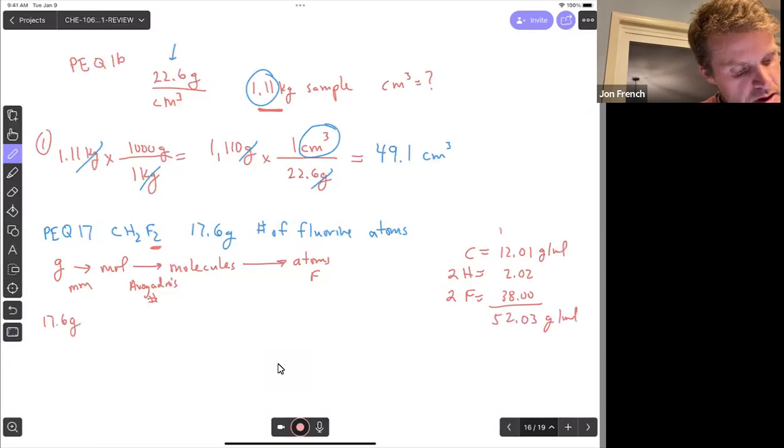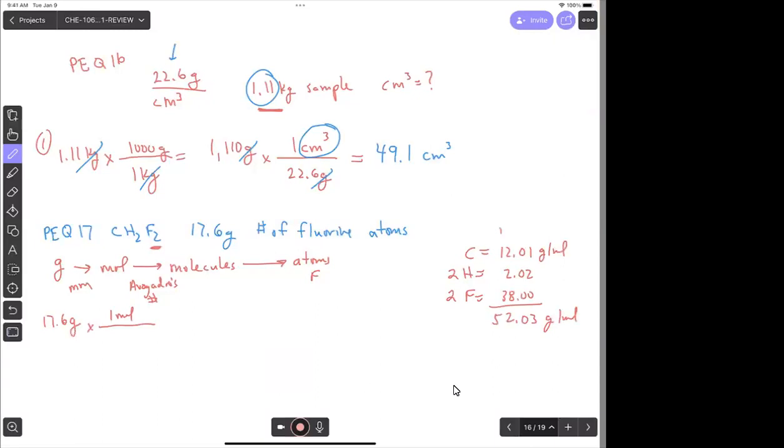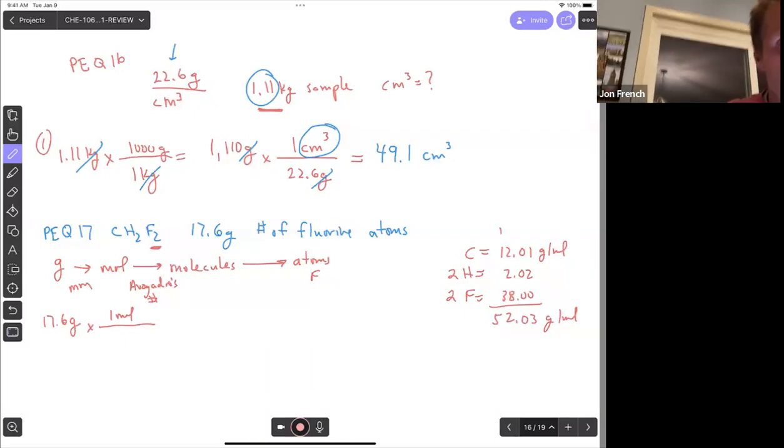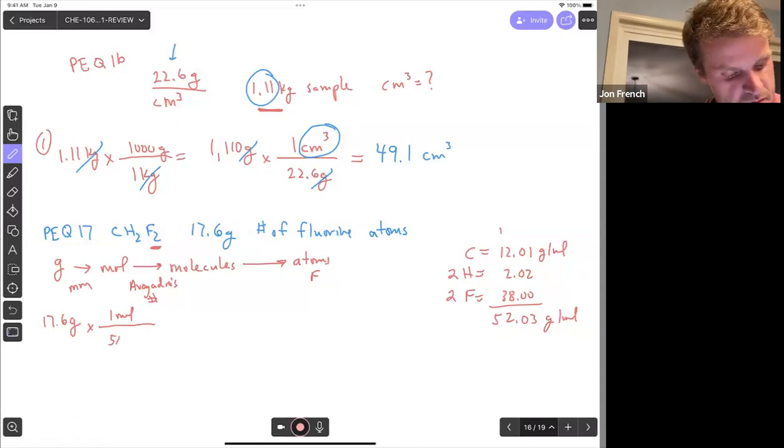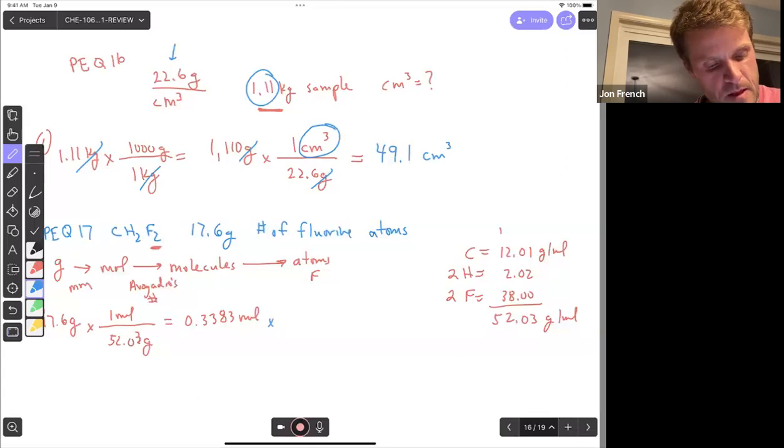Matt's got 17.6 grams of this fluorocarbon. And we know for every one mole, 52.03 grams. So we want to use Avogadro's number. Because we know for every one mole, 6.02 times 10 to the 23 molecules of this.